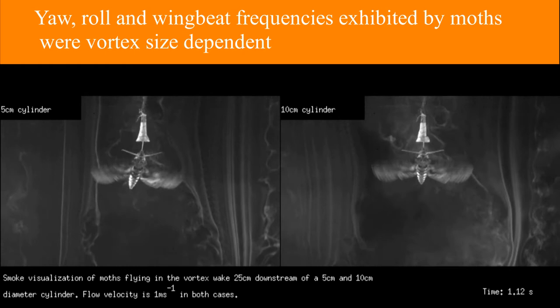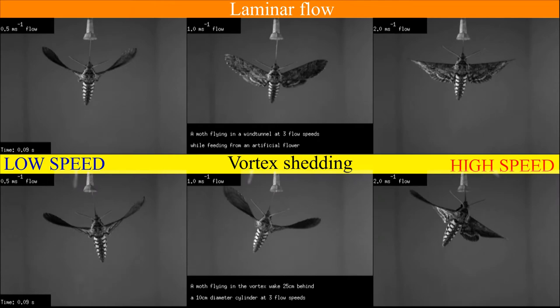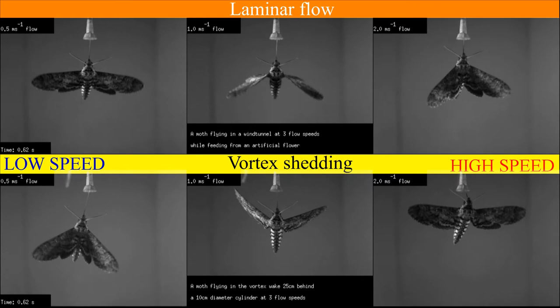For small vortices close to their source, moths turned out to yaw their bodies with an amplitude directly proportional to vortex size and strength, and at lower speeds exhibited body oscillation frequency directly proportional to the frequency of shed vortices. Wingbeat frequency also increased when moths flew in the vortex streets.